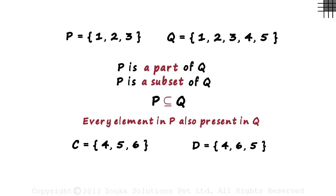But this statement raises a new query. Look at sets C and D. Set C has four, five and six as its elements. And set D has four, six and five as its elements. Both the sets have the same elements which makes them equal.